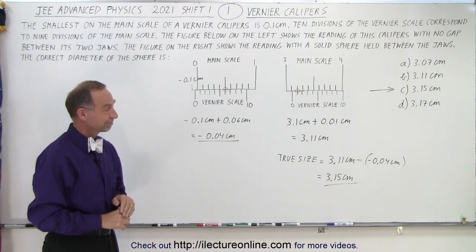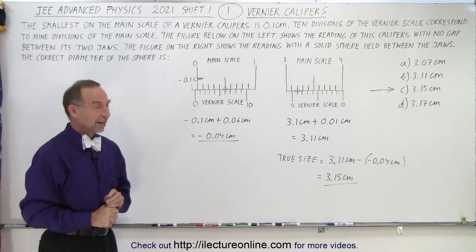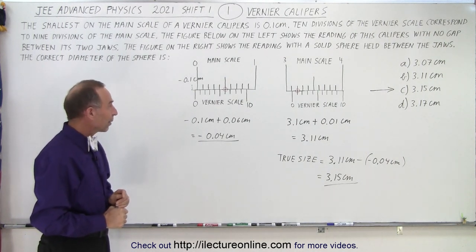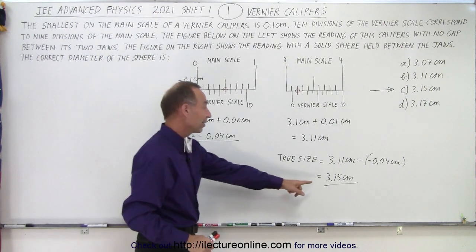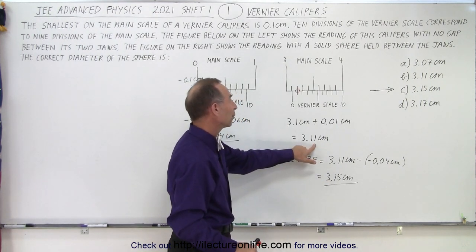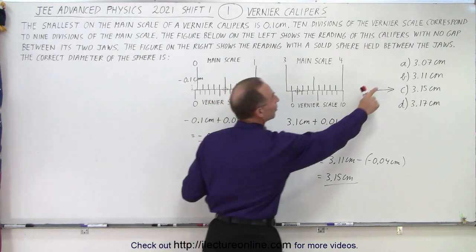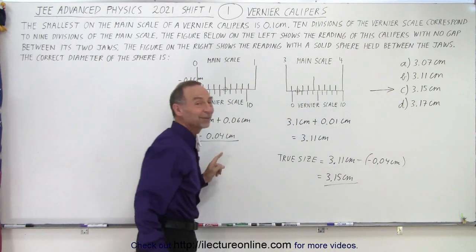Did they give you an answer? Do you need to subtraction there? Let's see what would happen if you were to subtract. Yeah, if you take 3.11 and subtract this then you would pick the incorrect answer of 3.07.